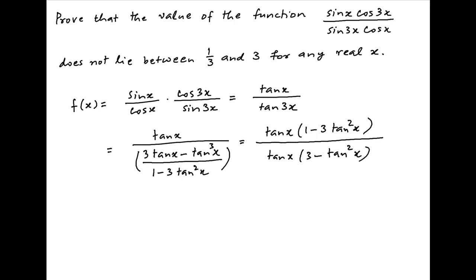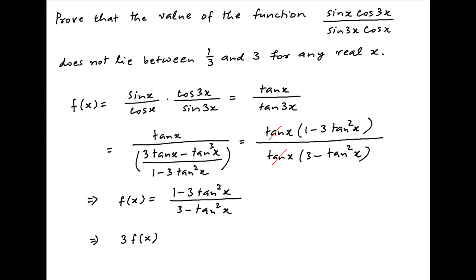Tan x cancels, and therefore f(x) simplifies to (1 minus 3 tan²x) divided by (3 minus tan²x). Cross multiplying, we get 3·f(x) minus f(x)·tan²x equals 1 minus 3 tan²x.